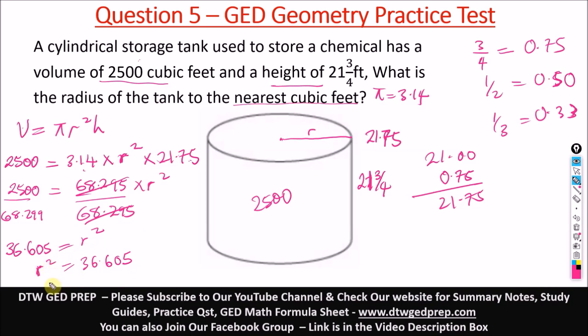So here, as I said earlier on, we have r squared. So to get just r alone, we have to square root this. And when you square root one side, you have to find the square root of the other side. And the square root of this is 6.05. So from here, we're told to, what is the radius of the tank to the nearest cubic feet? So to the nearest cubic feet, r will be what?